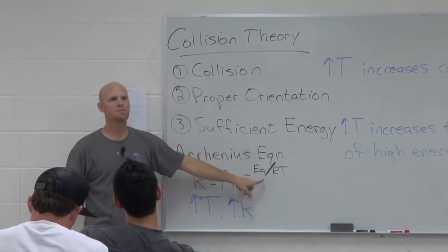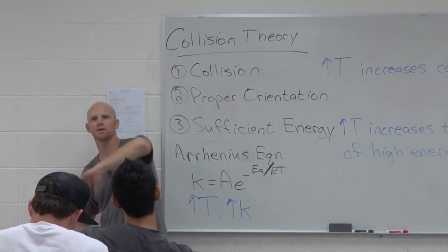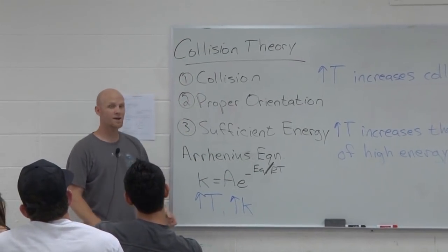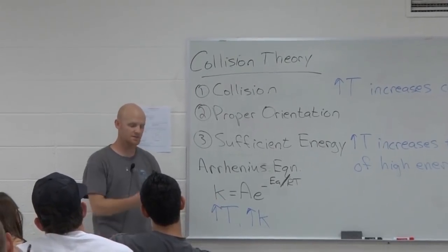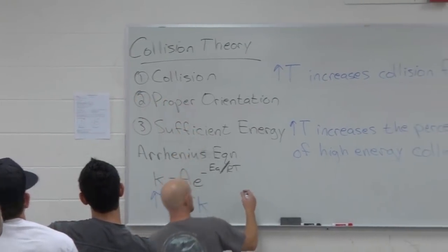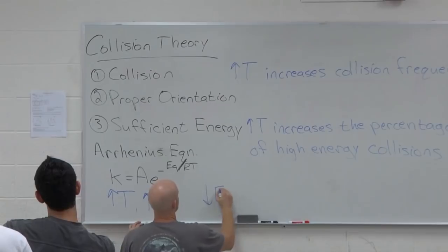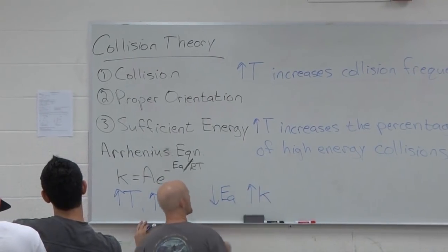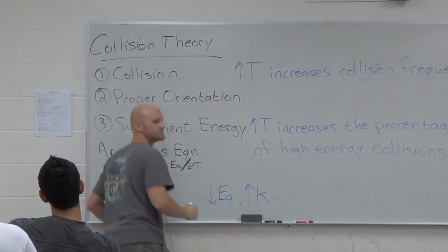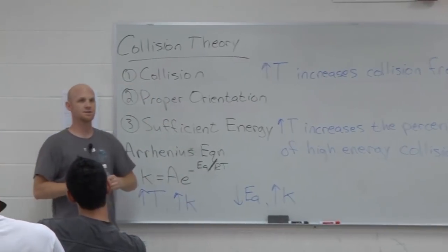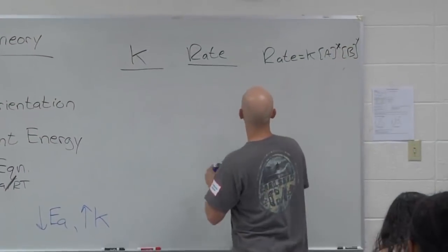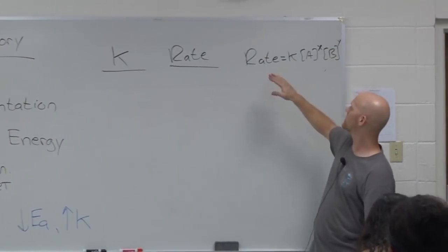So what about activation energy? What happens if you raise the activation energy barrier in a reaction? That's going to lower the rate because it lowers the rate constant. So I'll do it the other way around. If I lower the activation energy, that's going to increase the value of the rate constant. They're inversely proportional. How could you lower the activation energy? Add a catalyst.